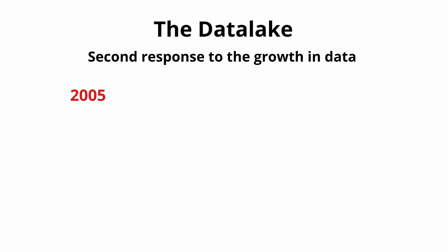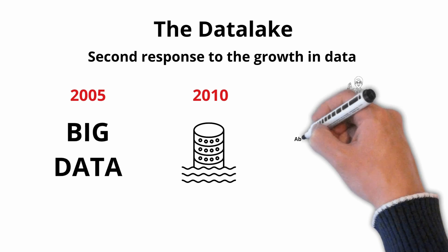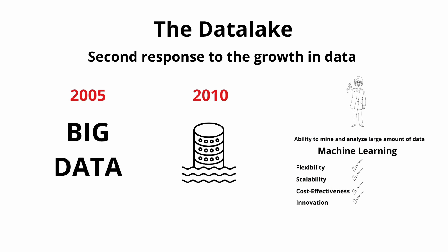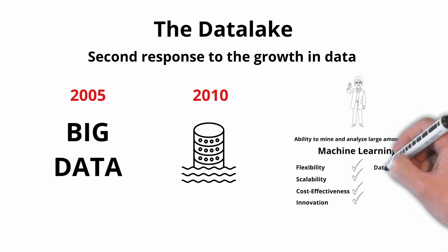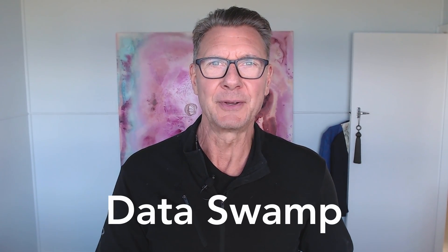The growth of unstructured and semi-structured data led in 2005 to the concept of big data, and in 2010 to the concept of the data lake. A data lake allows data scientists to mine and analyze large amounts of data for various purposes using tools and techniques such as machine learning. Data lakes have many benefits such as flexibility, scalability, cost effectiveness, and innovation, but they also have difficulties: data quality, governance, security, and integration. A poorly managed data lake can become a data swamp — a term for a data lake that is inaccessible or unreliable.